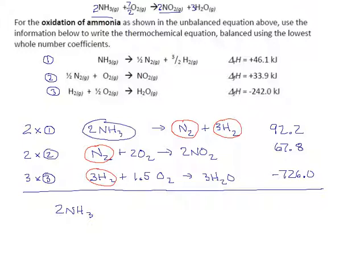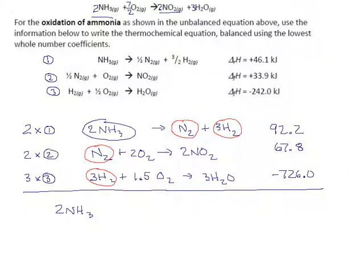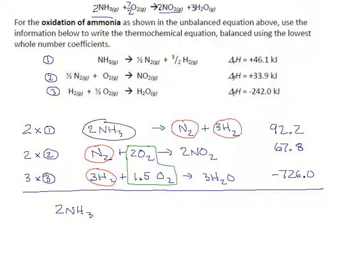And this isn't to cancel, but we can combine all our oxygens. We have 2 oxygens here and then another 1 and a half oxygen. So a total of 3 and a half oxygens. So on the left side, we get 2 NH3 plus 3.5 oxygen. And on the right, we get 2 nitrogen dioxide and 3 water.